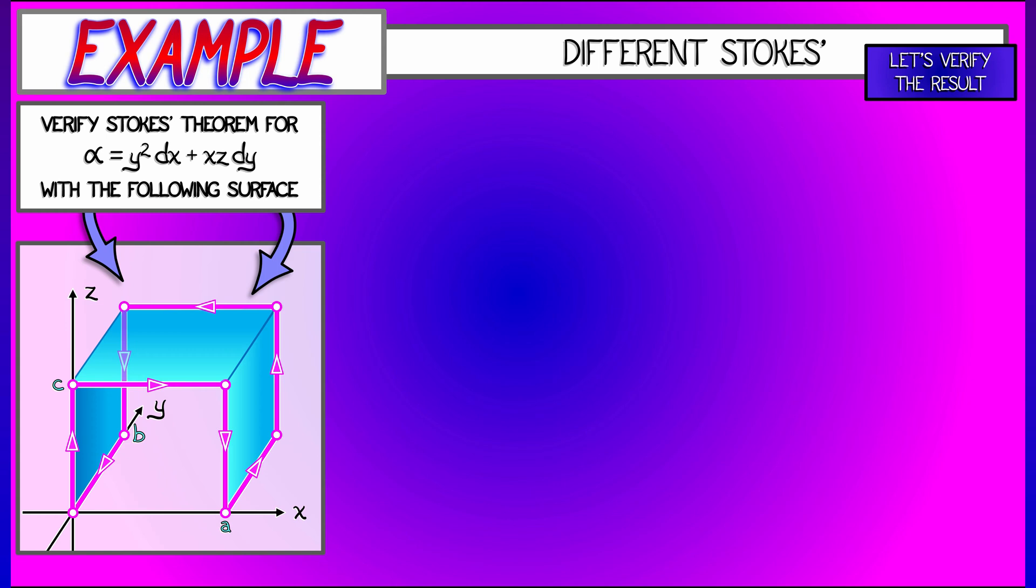Now, this box is oriented so as to have a particular orientation on the boundary curve. Notice that this surface D has an orientation given on the boundary of D. That boundary consists of a whole bunch of different pieces. How many straight line segments are there? One, two, three, four, five, six, seven, eight. Eight different straight line segments.